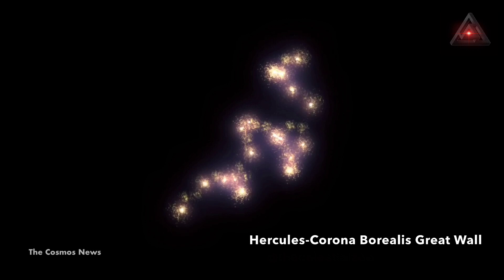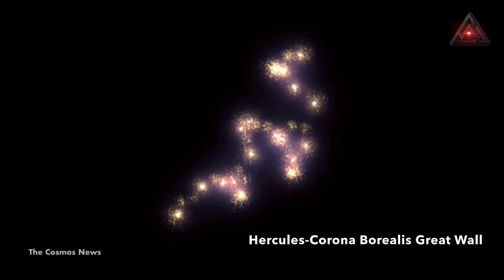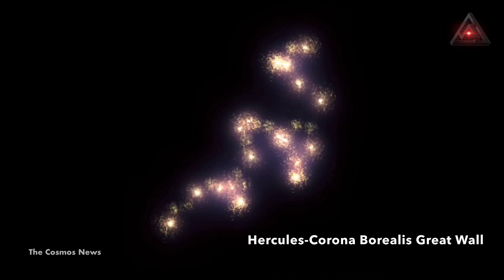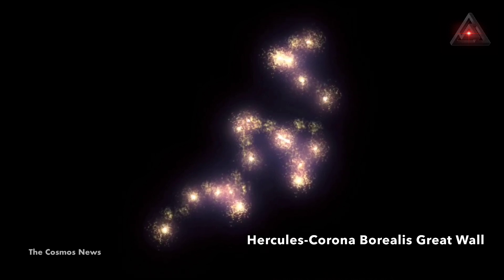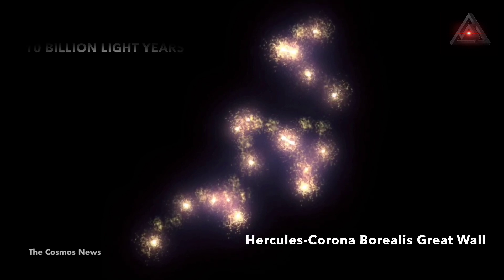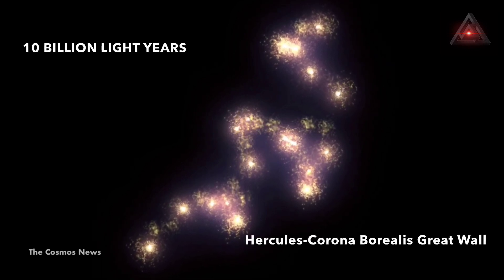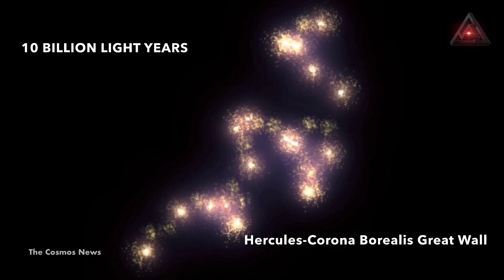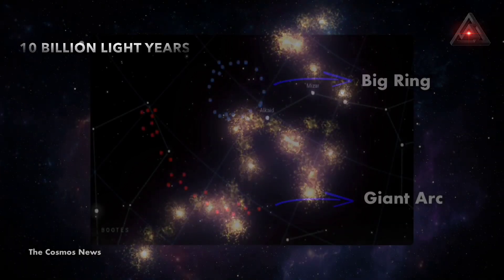Large structures have also been discovered by other cosmologists. The biggest single entity scientists have identified is a super-cluster of galaxies, the Hercules-Corona-Borealis Great Wall, which is roughly 10 billion light-years wide. The Big Ring appears as an almost perfect circle in the sky.